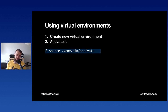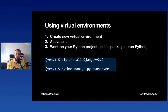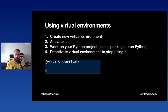Now we have to activate the virtual environment. Inside the venv folder is a `bin` directory with an `activate` script. Run it with `source`. If you're using a different shell or Windows there are other activation files available. Once activated, your terminal prompt displays the virtual environment name in parentheses. Now install packages with pip — they go into this virtual environment — and run Python scripts with access to that environment's packages. To stop using it, run `deactivate`.